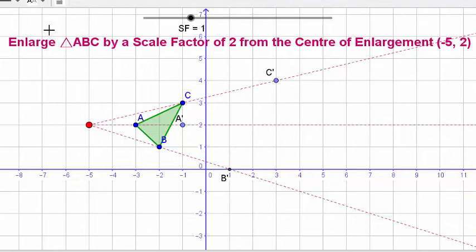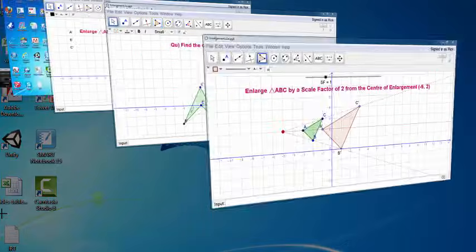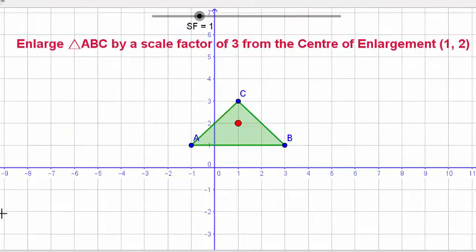And that's just a question of joining up the vertices. A to B to C, and then join that up, and we have a perfectly enlarged triangle by scale factor of two.